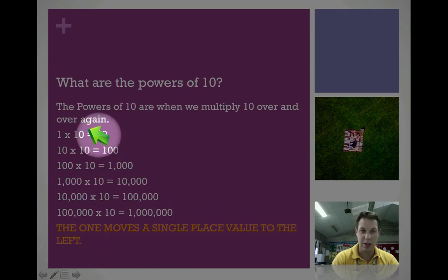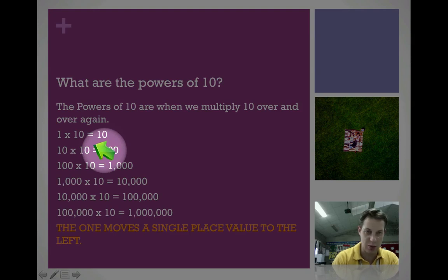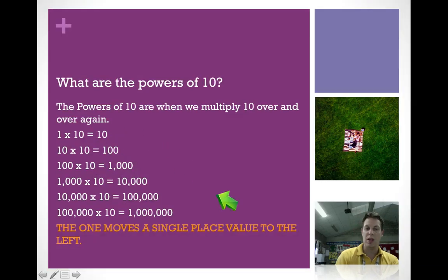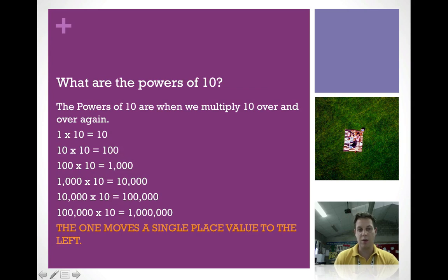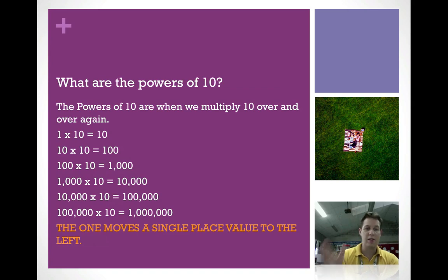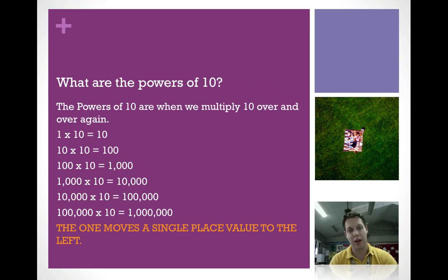It starts in the tens place, then goes one place to the left in the hundreds place, then one place to the left in the thousands, and one place left in the 10,000s. Each time we multiply by 10, each answer has one more zero than the previous, and the 1 is going to move a single place value to the left.